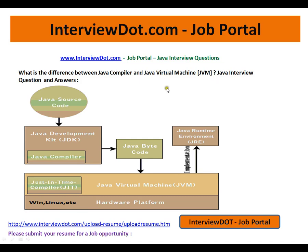So what exactly does the Java compiler do? Whenever you have your Java source code — for example, employee.java — and you give that code to the Java compiler, it verifies if there is any syntax error or any form of error. It will stop and show you the exact error. So the Java compiler verifies errors, and if there is no error in your source code, it generates Java bytecode.